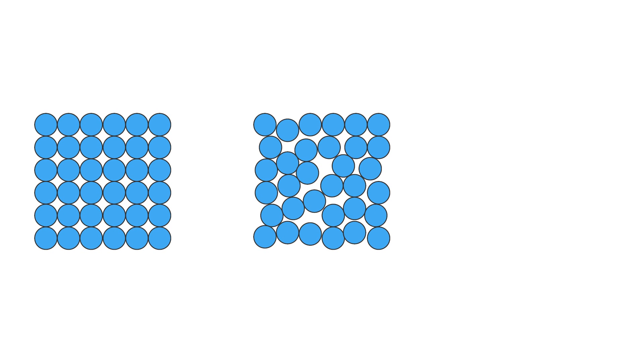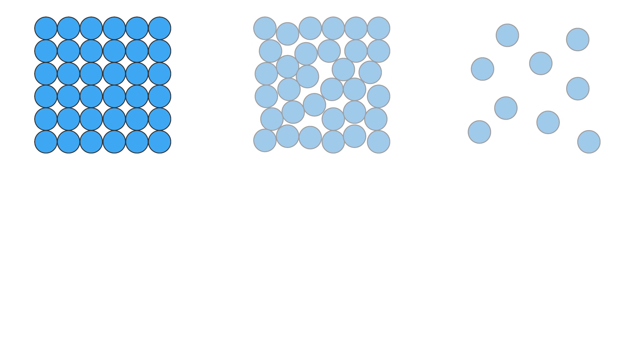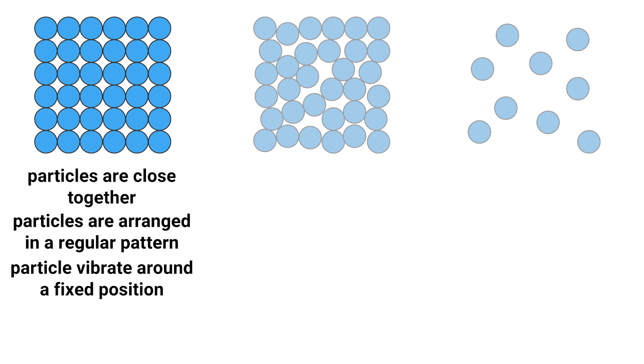Solids, liquids and gases can be represented by drawing particle diagrams. You can see on the screen the particle diagram that we would draw for a solid, a liquid and a gas. In a solid, particles are very close and those particles are arranged in a regular pattern. The particles vibrate around a fixed position and those particles have very low energy.